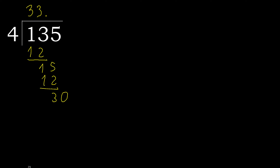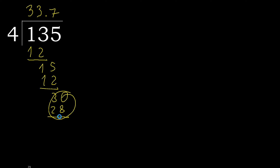Bring down 0, making 30. 4 multiplied by 8 is greater. 4 multiplied by 7 is 28, not greater. Subtract and complete.